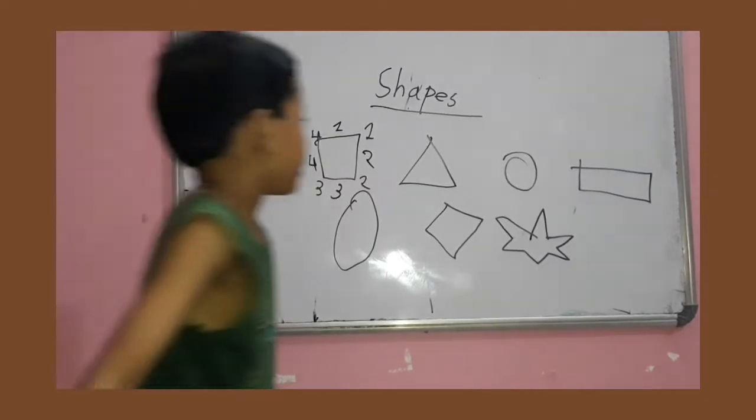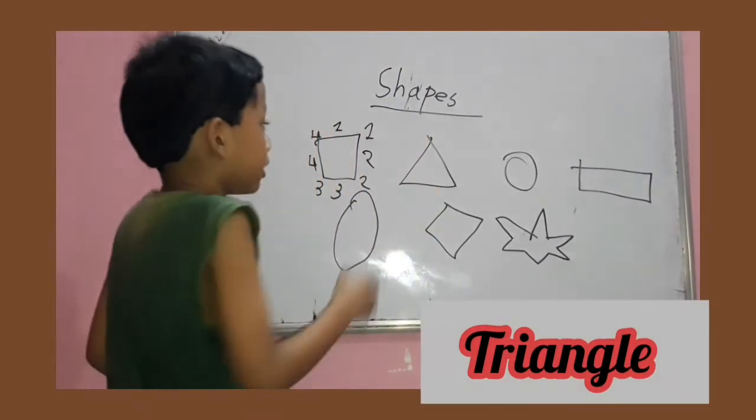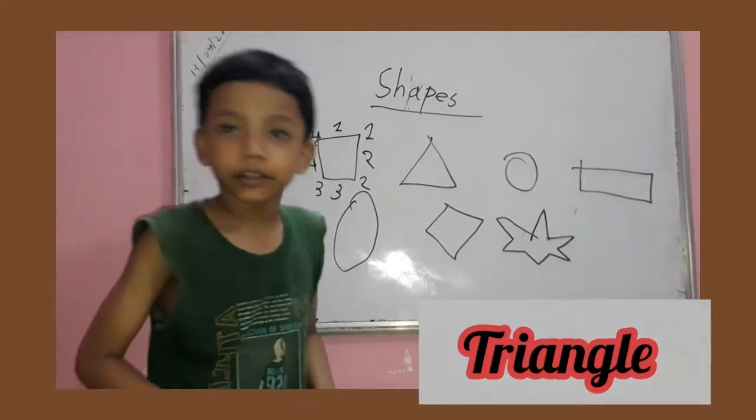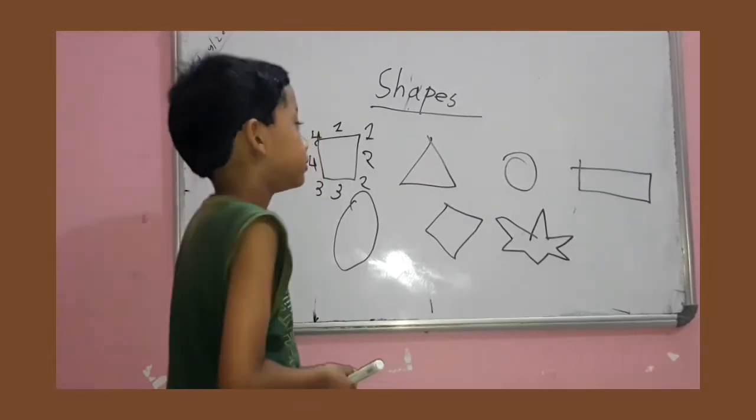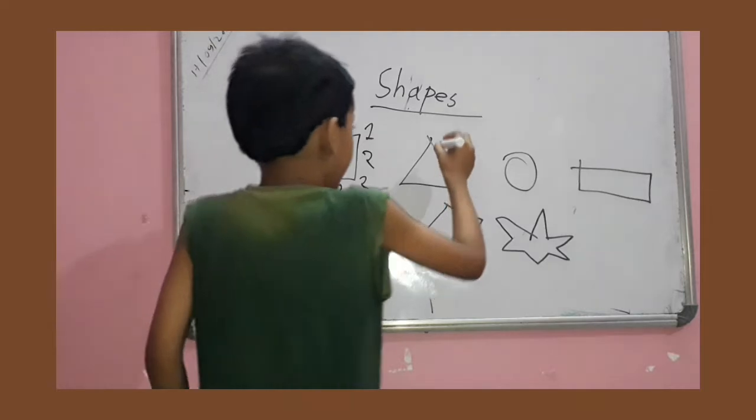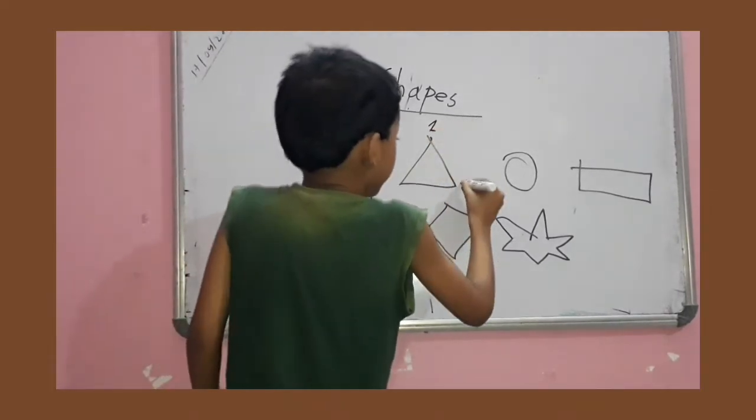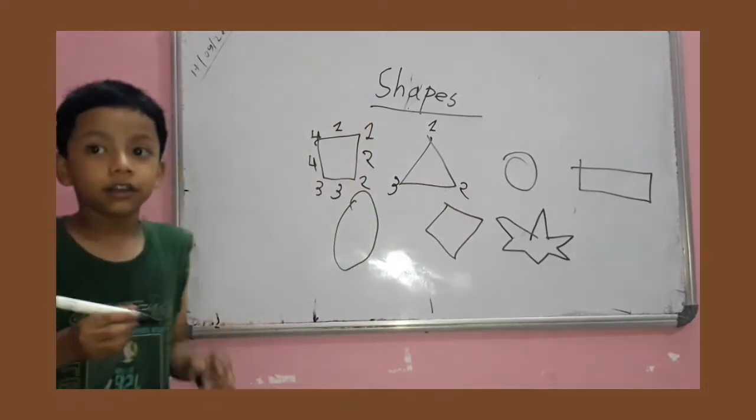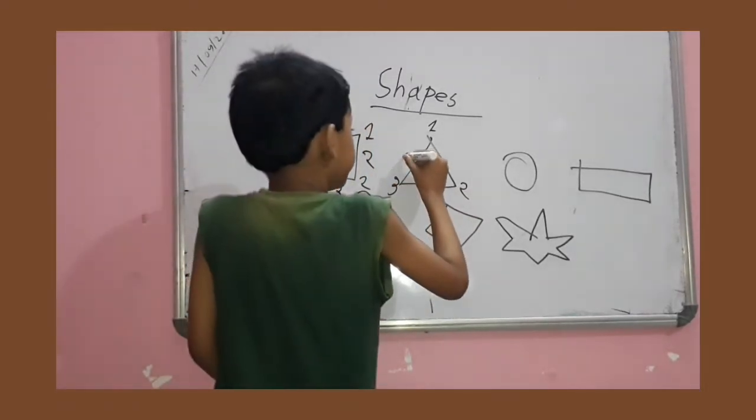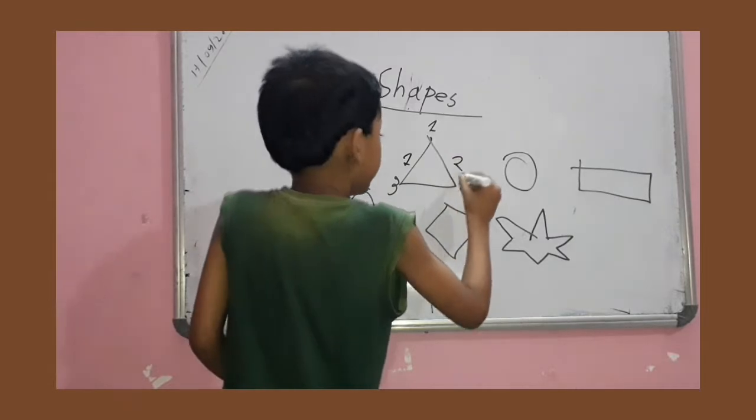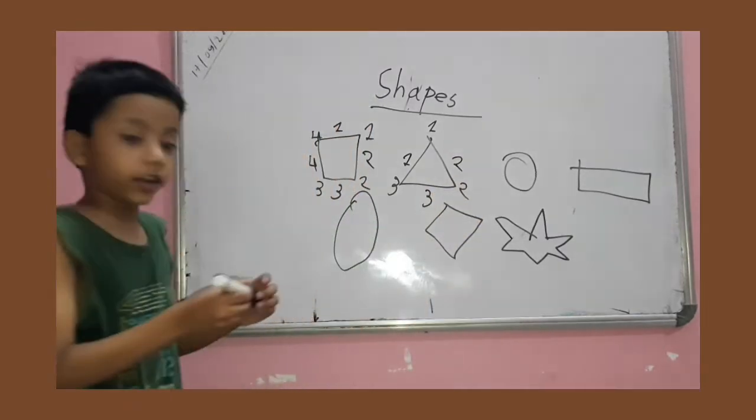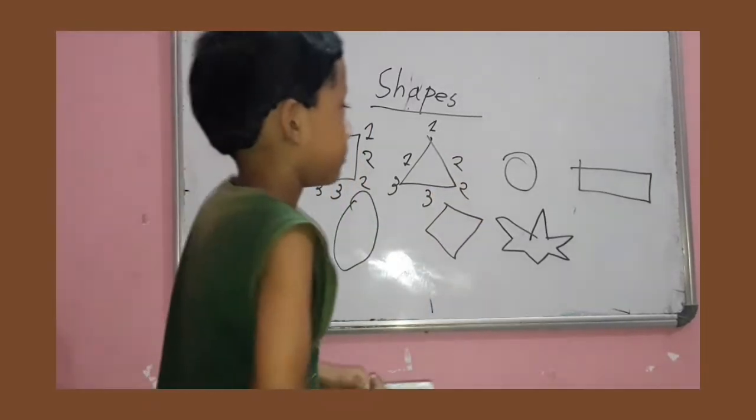Here, next. Now, this is a triangle, right? And this is a triangle. How many sides? How many points are there? One, two, three. Three sides. And one, two, three. And three sides. And next.